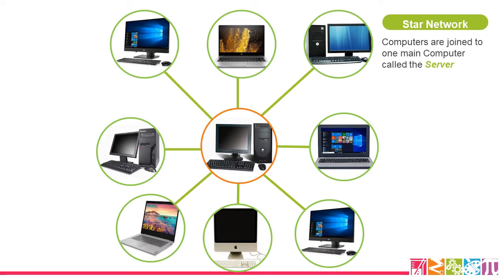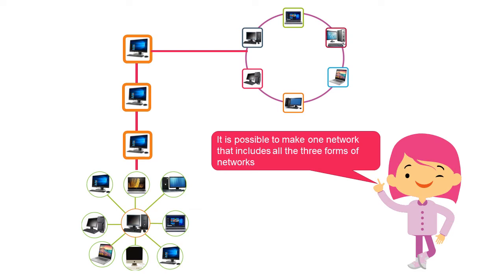Star network: computers are joined to one main computer called the server. You see here the computers and the center is called the server. The other computers are joined to this server, and the form looks like a star. It is also possible to make one setup that includes all three forms of network.